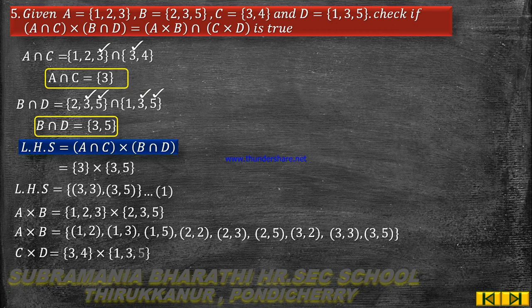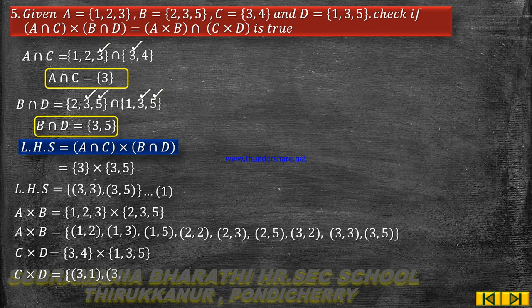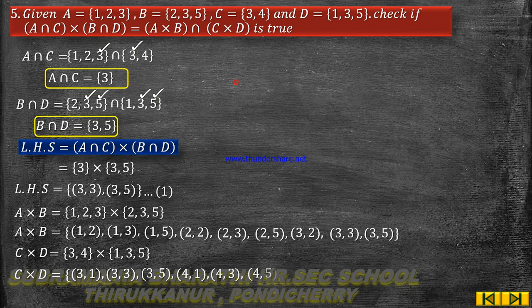Next, find C×D: elements of C = {3,4} cross elements of D = {1,3,5}. So C×D = {(3,1),(3,3),(3,5),(4,1),(4,3),(4,5)}.